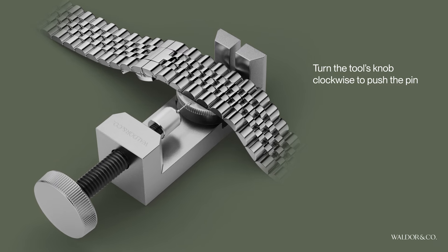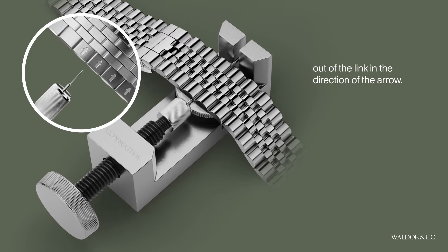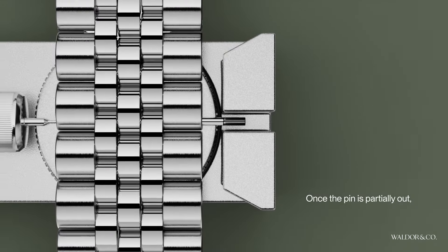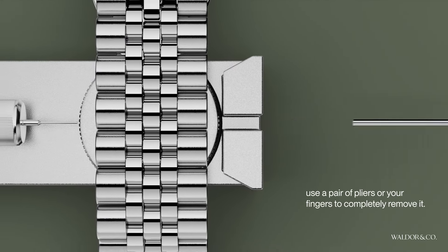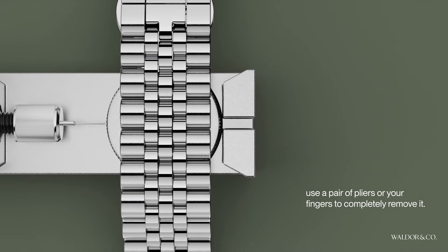Turn the tool's knob clockwise to push the pin out of the link in the direction of the arrow. Once the pin is partially out, use a pair of pliers or your fingers to completely remove it.